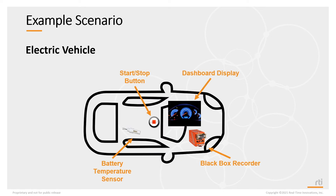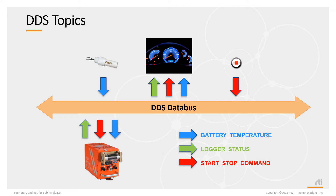Here's an example of an electric car. This electric car has a start and stop button, a battery temperature sensor, a dashboard display, and a black box recorder. If we were going to use DDS in this car, the first thing we have to do is identify the different data streams. For example, the battery might be sending out a data stream of battery temperature. The start-stop button might be sending out a stream of commands. The data logger may be sending out information about its status. Different systems might publish these streams and different systems might subscribe to them — here, the display subscribes to all the data.